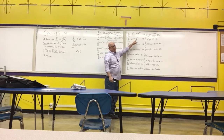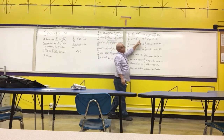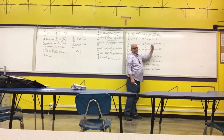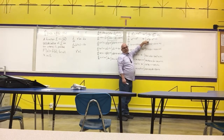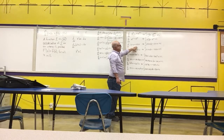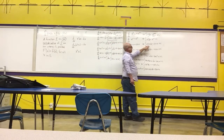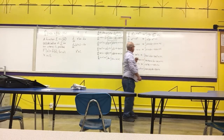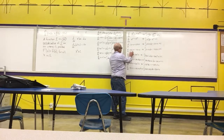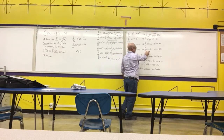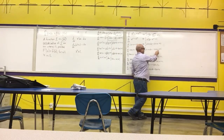The derivative of e to the x is e to the x, so the antiderivative of e to the x is e to the x plus C. That's why natural log and exponential functions are really nice to work with in calculus. The derivative of sine was cosine, so the antiderivative of cosine is sine plus C. The derivative of cosine was negative sine, so the antiderivative of sine is negative cosine plus C.